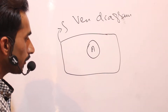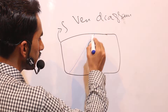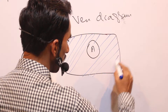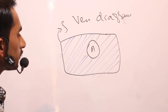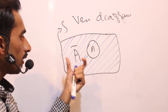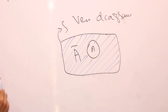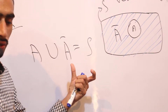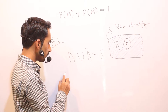If I take event A, the remaining portion of the sample space is equal to A-bar. If I combine both, A union A-bar is equal to the sample space. Now apply the probability on both sides.